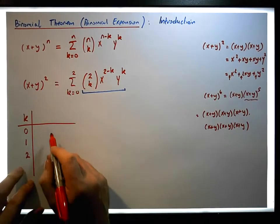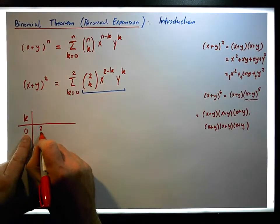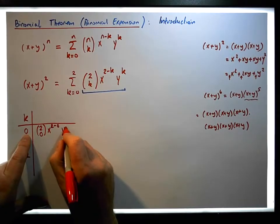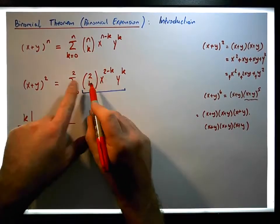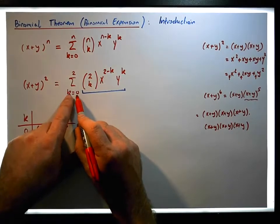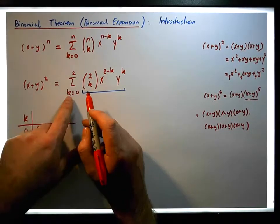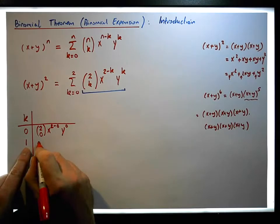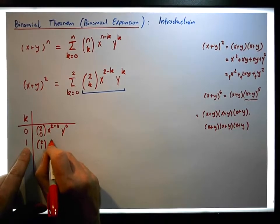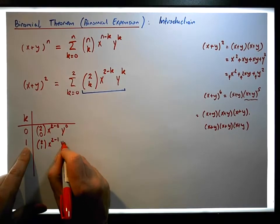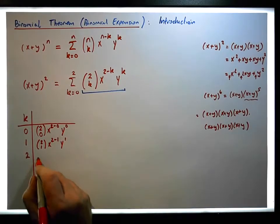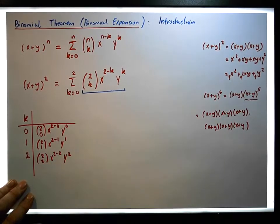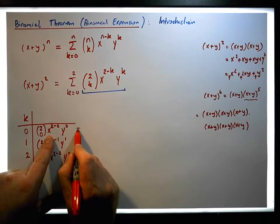So the first term, when k equals zero, becomes 2-choose-0 times x to the power of two minus zero times y to the power of zero. When k equals one, this becomes 2-choose-1 times x to the power of two minus one times y to the power of one. And when k equals two, this becomes 2-choose-2 times x to the power of two minus two times y to the power of two.